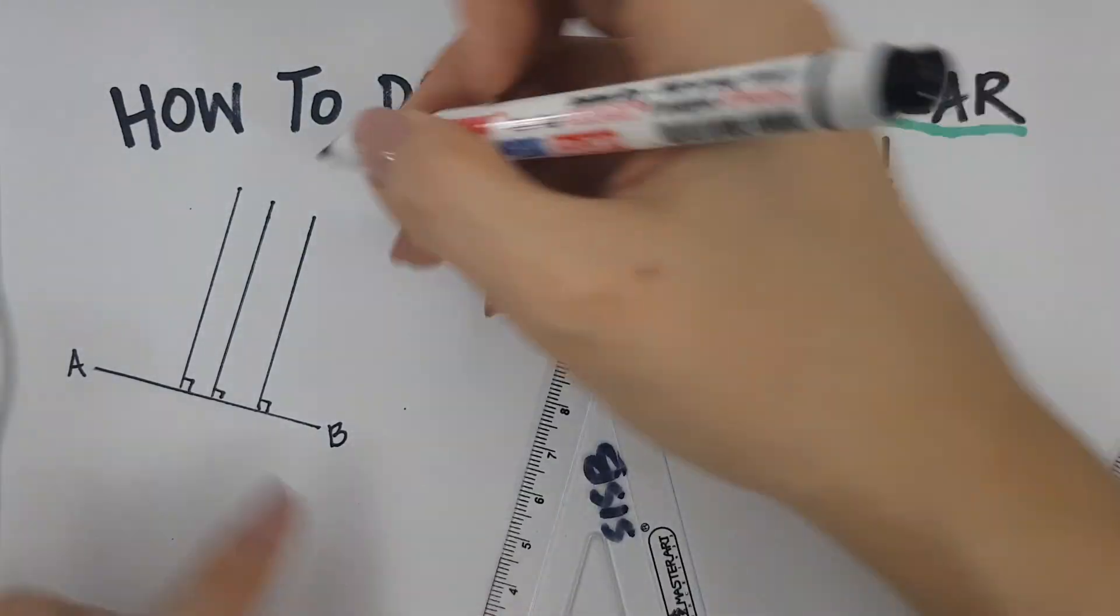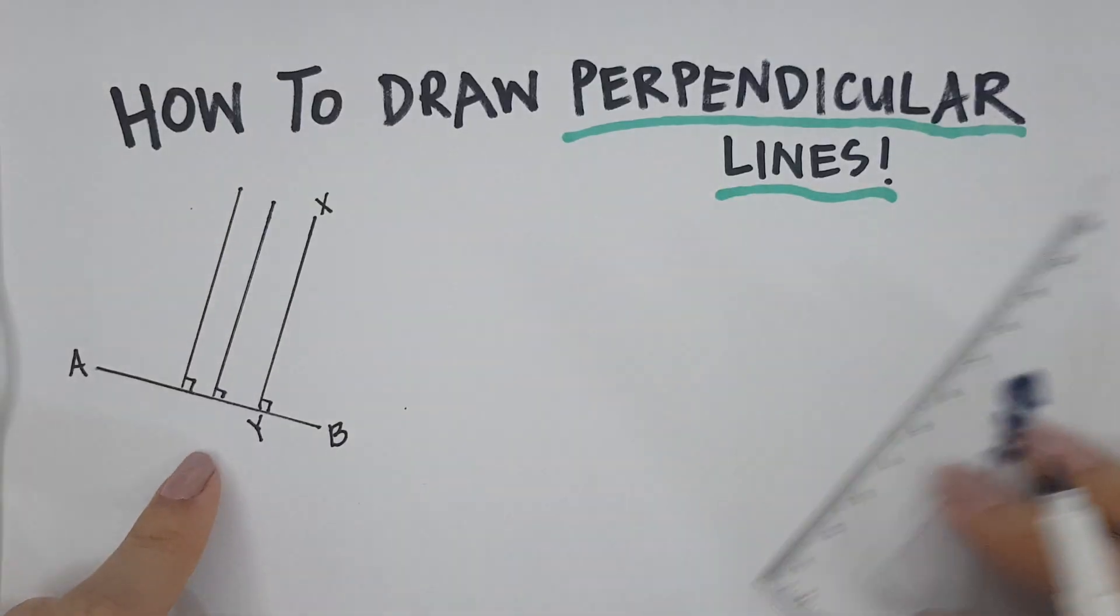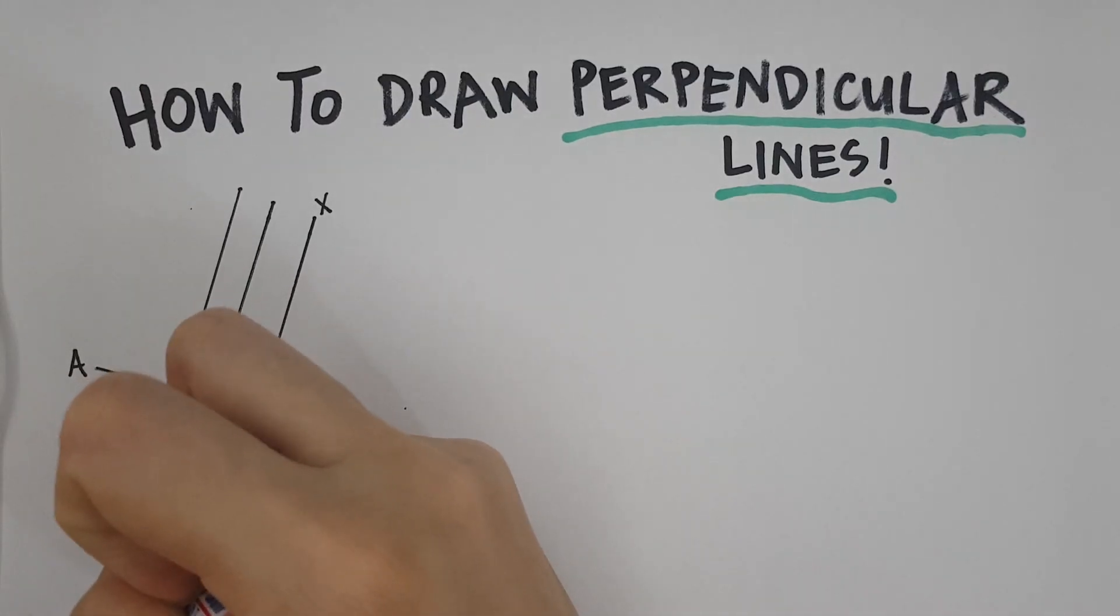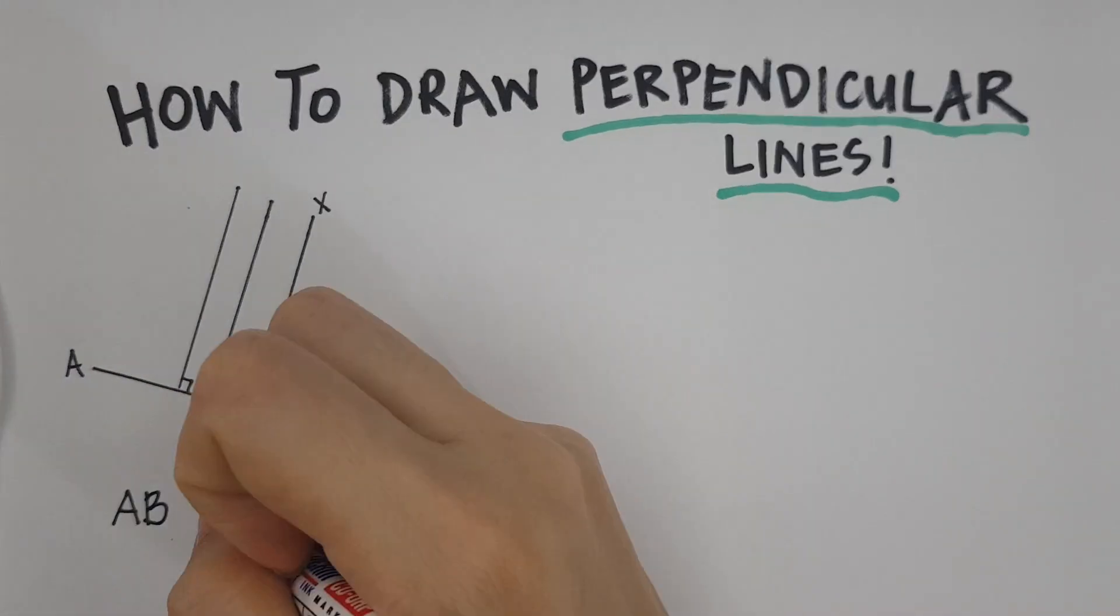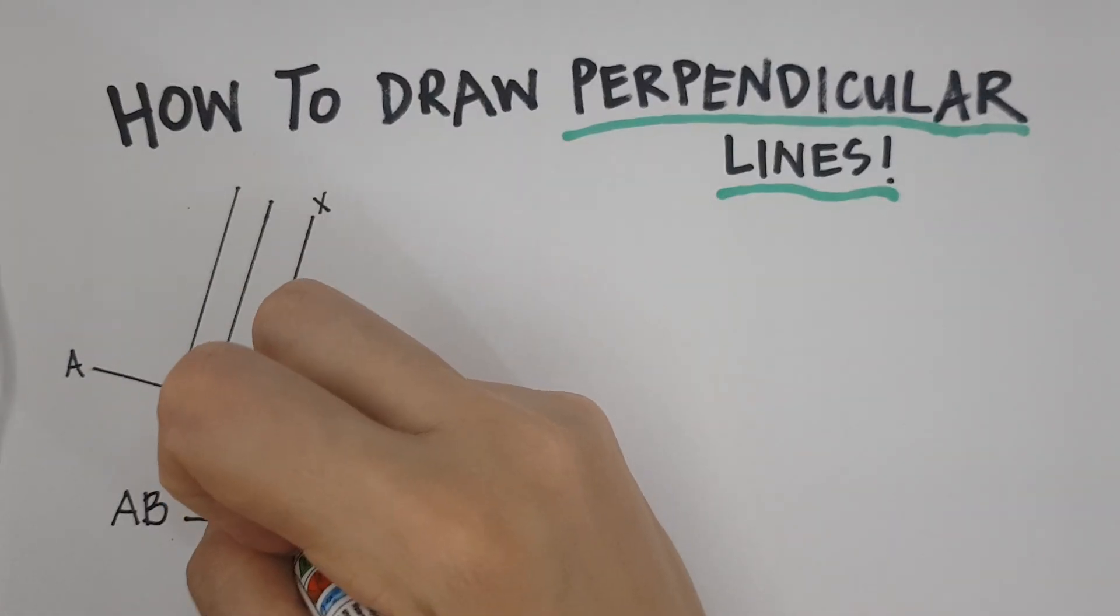So for example, if I'm talking about this one, I'm going to name it XY. And how do we write it down? We're going to write AB is perpendicular. Note the symbol to XY.